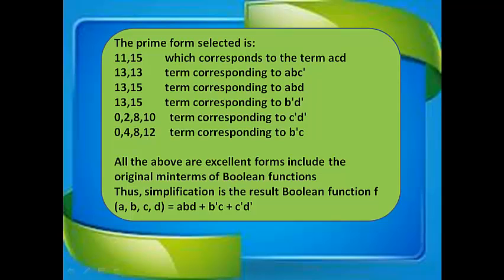The prime forms selected are: {11, 15} corresponding to the term a·c·d; {13} corresponding to b·c complement; {13, 15} corresponding to b·d; {13, 15} corresponding to b complement·d complement; {0, 2, 8, 10} corresponding to c complement·d complement; {0, 4, 8, 12} corresponding to b complement·c. All of the above prime forms cover the original minterms of the Boolean function.